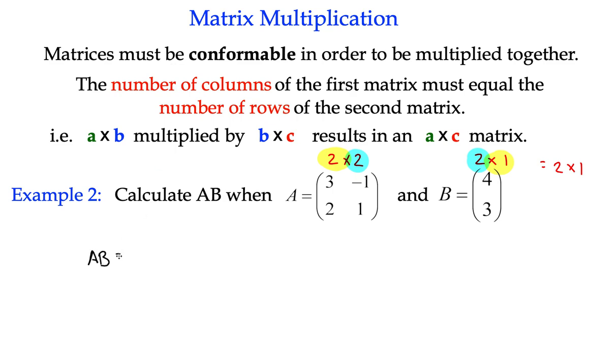So AB is equal to 3, negative 1, 2, 1, multiplied by 4, 3. So what we want to do here is we know the answer is going to be a two by one matrix. There's actually only going to be two numbers in our answer. There's going to be one here and there's going to be one here. That's a two by one matrix. How do we get those two numbers?